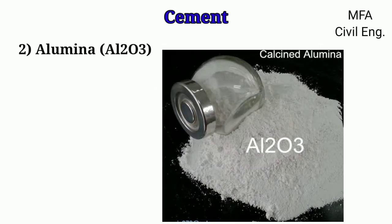Cement contains alumina about 3 to 8 percent. A high percentage of alumina tends to reduce the setting time but also increases the strength.